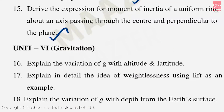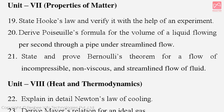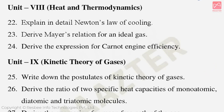Unit 6 Gravitation — important five-mark questions: Explain the variation of g with altitude and latitude. Explain in detail the idea of weightlessness using a lift as an example. Explain the variation of g with depth from the Earth's surface. Unit 7 Properties of Matter: State and prove Bernoulli's theorem for the flow of incompressible, non-viscous and streamlined fluid. Unit 8 Heat and Thermodynamics: Explain in detail Newton's law of cooling. Derive Mayer's relation for an ideal gas. Derive the expression for Carnot engine efficiency.